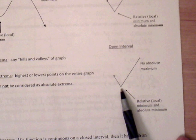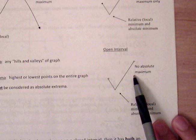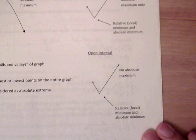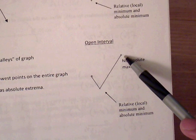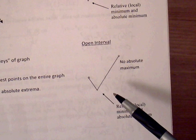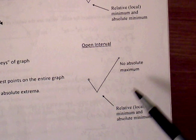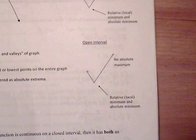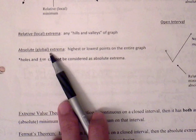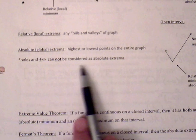On an open interval, we still have a relative or local minimum and absolute minimum, but in this case we don't have an absolute maximum because we have an open circle there. With an open circle, if we choose any point close to it, we can always choose a point that is closer — so we cannot locate a physical point for the absolute maximum. Holes and plus or minus infinity cannot be considered as an absolute extrema.